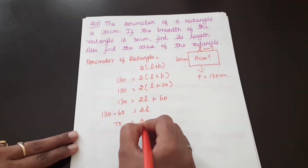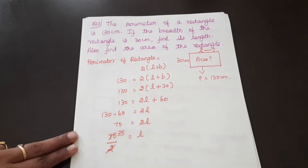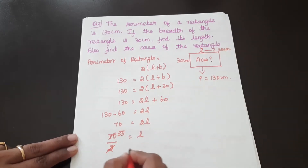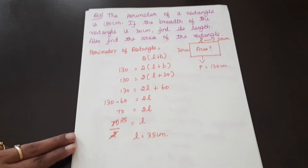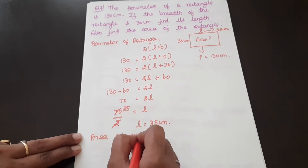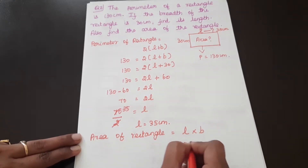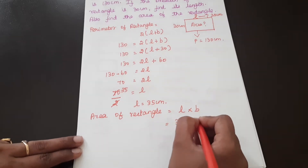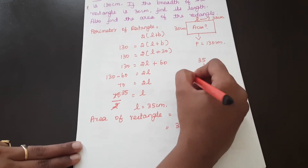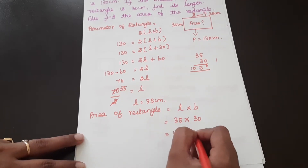So 130 minus 60 equals 2L, giving 70 equals 2L. Therefore L equals 70 by 2, which is 35. So length is 35 cm. Area of rectangle equals L into B, so 35 into 30 equals 1050 cm².